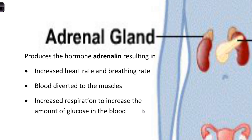Adrenaline increases our heart rate and breathing rate - when you do a bit of exercise, you'll release small amounts of adrenaline. It causes our blood to be diverted to our muscles - when you get a fright, adrenaline might be released and help blood get sent to the muscles to prepare you to fight or to run. And it increases our respiration rate, basically to increase the amount of glucose available in the blood - increasing the rate at which we break down glucose to release energy. So increased heart rate, increased breathing rate, blood sent to muscles for fight or flight, and increased rate of respiration for energy production.